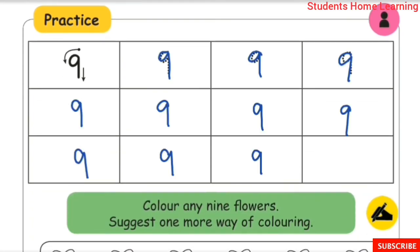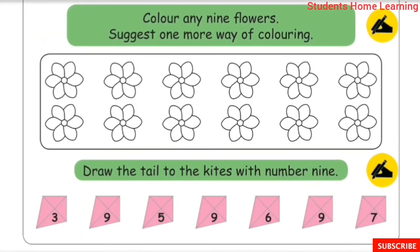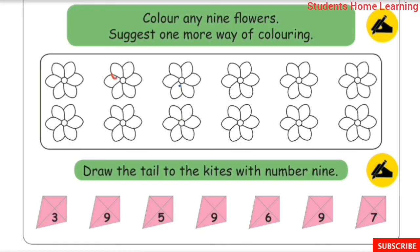Number 9 — Learn: 9 pencils, 9 beads, 9 fingers, 9 objects. Practice writing 9. Color any 9 flowers, and suggest one more way of coloring 9 flowers: 1, 2, 3, 4, 5, 6, 7, 8, 9. Draw the tails to the kites, with number 9.